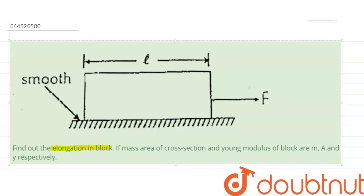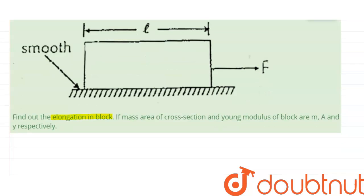Hello everyone. The question is: find out the elongation in a block if mass, area of cross-section, and Young's modulus of the block are m, a, and y respectively. The mass is m, area is a, and Young's modulus is y. As you can see, this is a figure which has a block of length l, and we apply a force f on this block. The surface is smooth — there is no friction between this block and the surface.